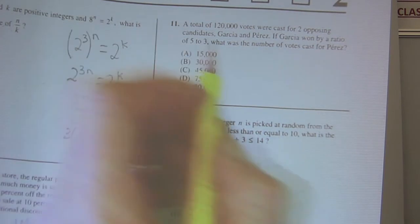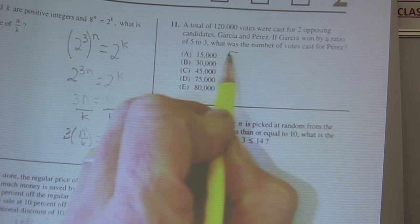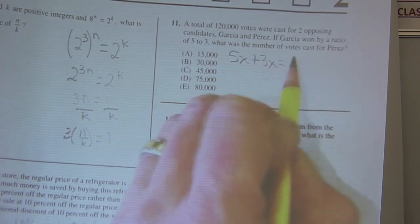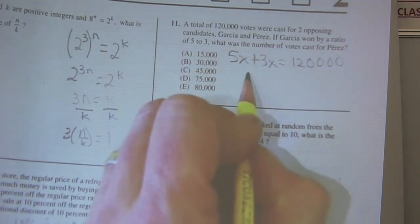Okay, when they do these ratios, you guys, and they do these for triangles, the ratio of the angles and all that stuff, you just set it up like this: 5x plus 3x equals that total, 120,000, and you solve for x.